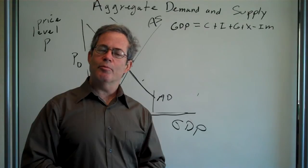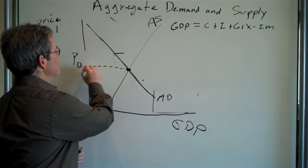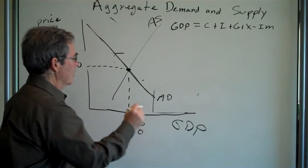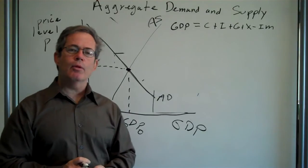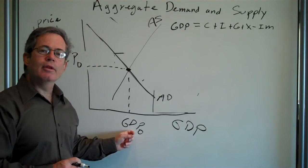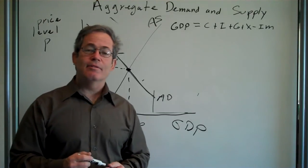And they're going to want to produce more. And right here where the two lines cross, aggregate supply will equal aggregate demand, and output will be determined at GDP0. That's a nice nifty model.